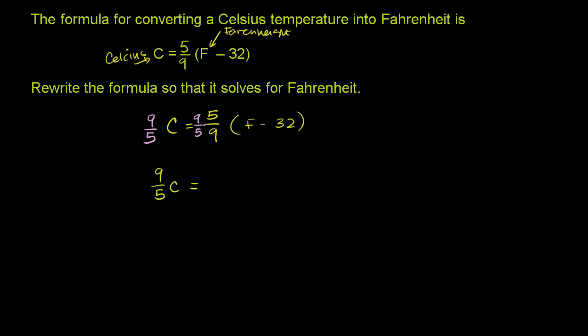the whole reason we wanted to multiply the right side by 9 fifths is these 9's cancel out, these 5 cancel out, and this just becomes a 1. So 9 fifths times the Celsius temperature is going to be equal to this expression. The Fahrenheit temperature minus 32. We don't need the parentheses anymore because this is the only expression on the right-hand side.